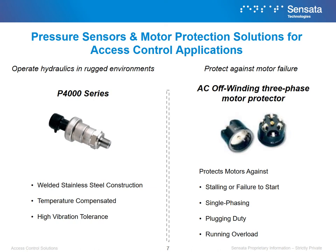Motor protection components are used to protect the motor of access control applications. Motor failure can lead to a larger macro problem for larger systems when traffic flow is hindered. Furthermore, maintenance can be costly and hard to execute for remote access control applications. Motor protection helps prevent damage to the motor, which reduces maintenance needs. Our AC off-winding three-phase motor protector protects a three-phase motor against overheating. A damaged motor can lead to a backup of traffic flow, and an off-winding three-phase motor protector can prevent damage associated with constant operation.